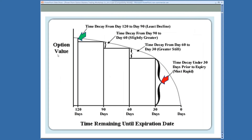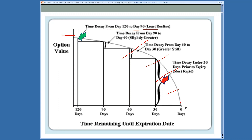Looking at the time curve, you can dramatically see how time affects your option. When you're out 90 to 120 days or further, time decay is pretty flat — a gradual, barely visible move. But it really starts accelerating once you get to 30 days from expiration. Weeklies get even more accelerated, and ultimately the option's time value will go to zero.